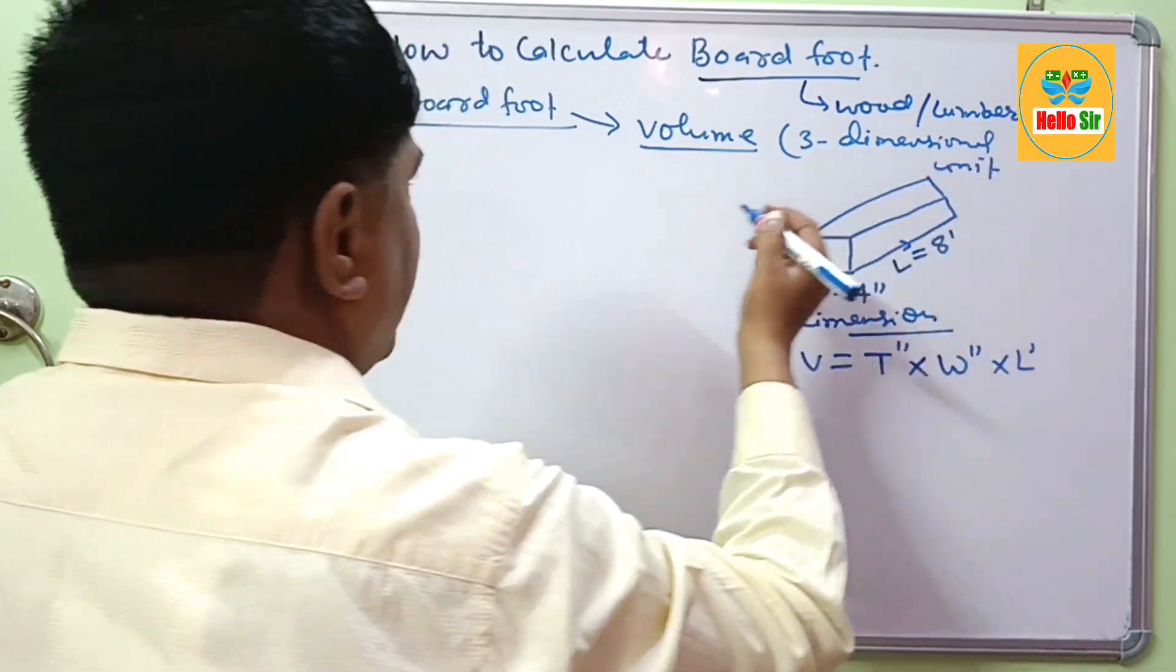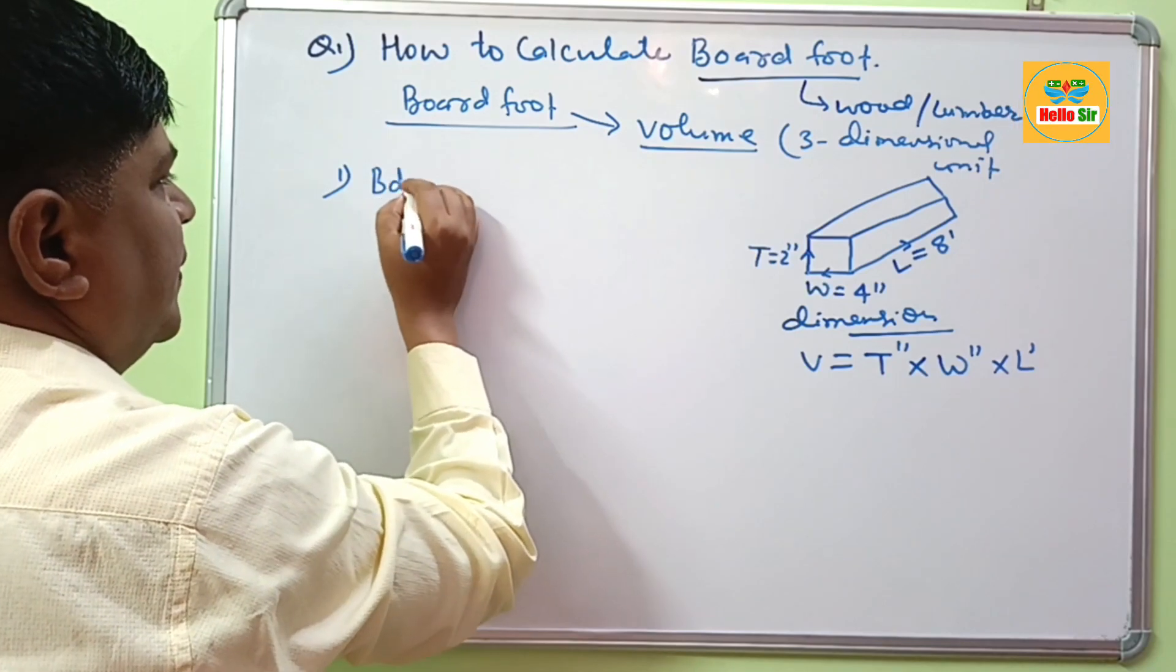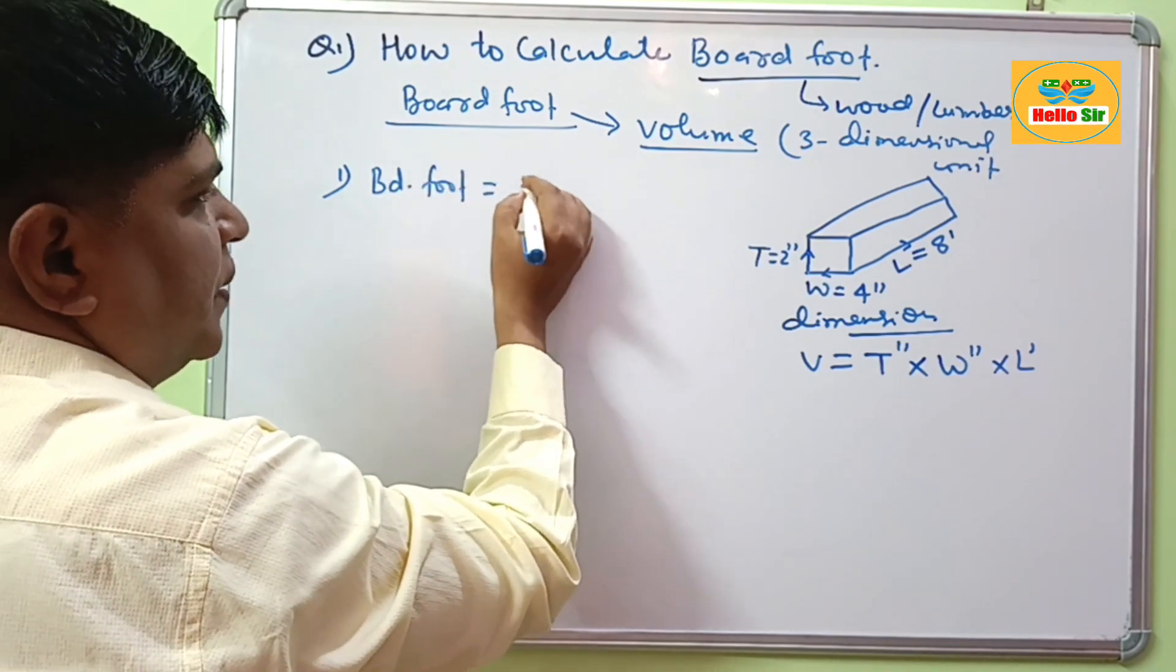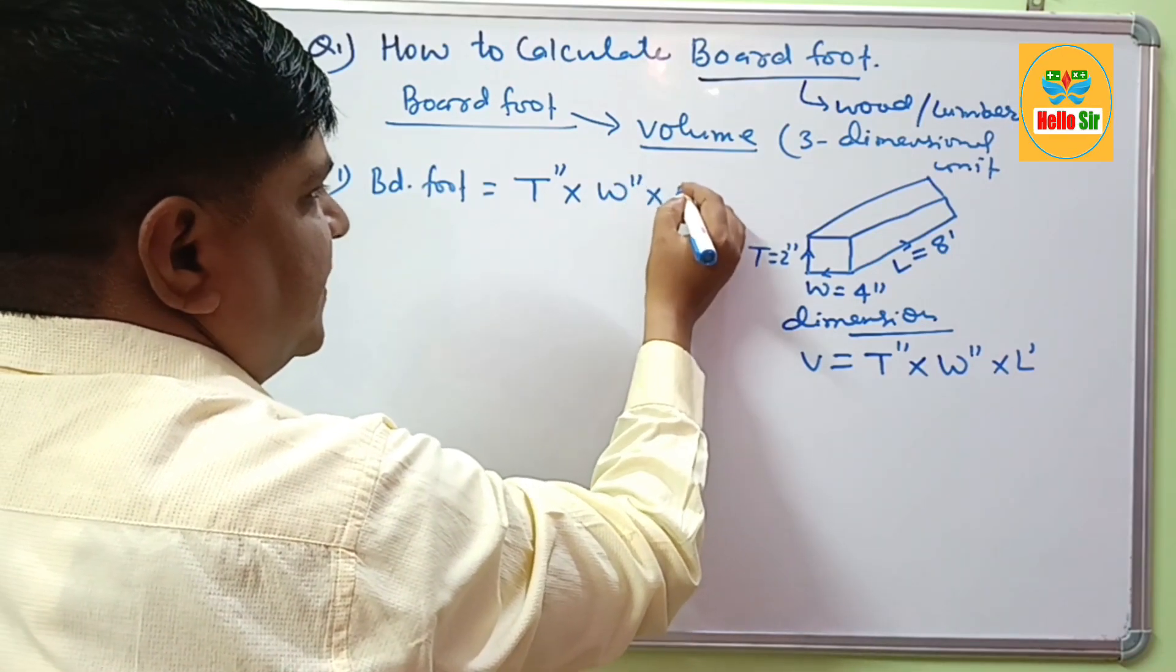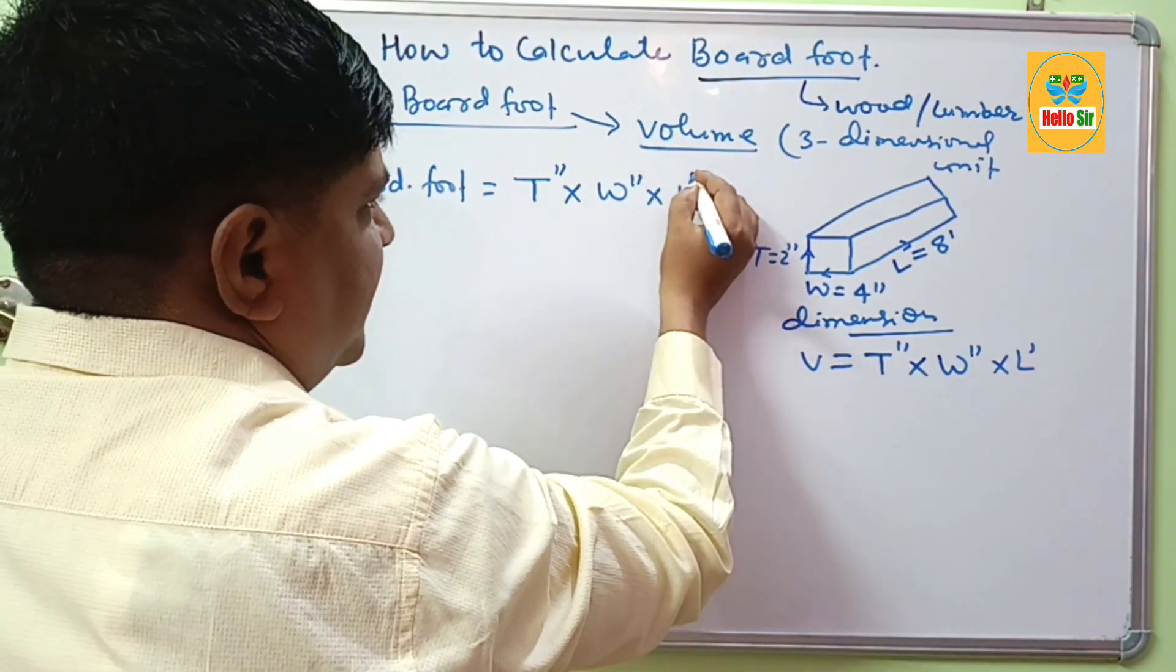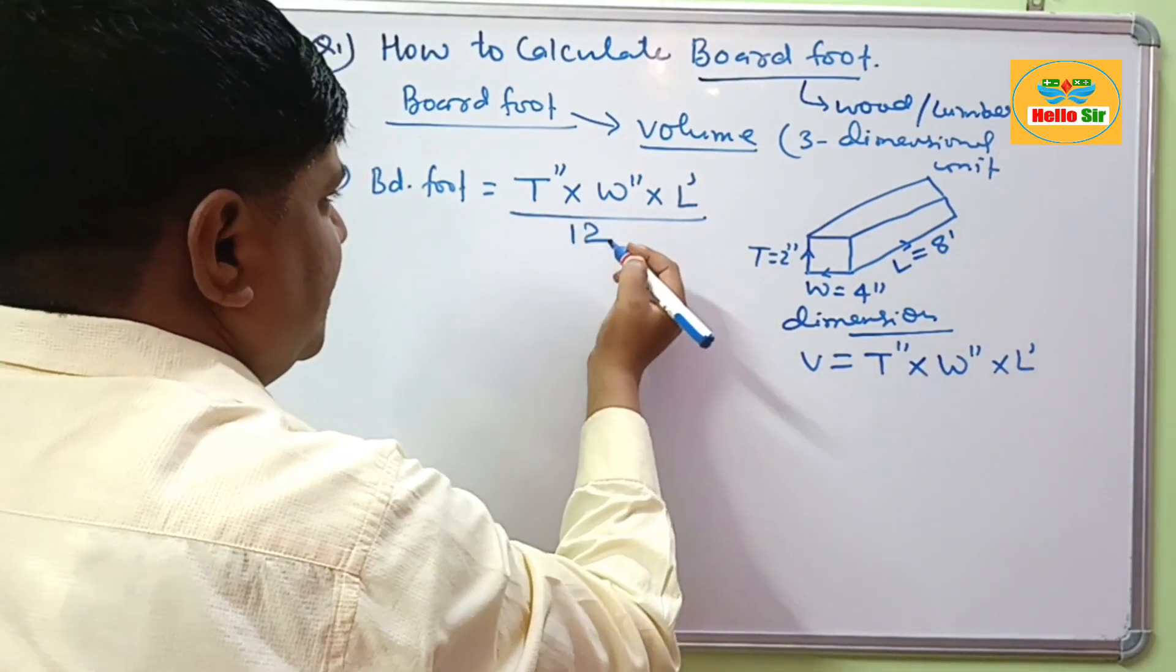The formula used to calculate board feet is equal to thickness in inches, width in inches and length in foot. Then you divide by 12.